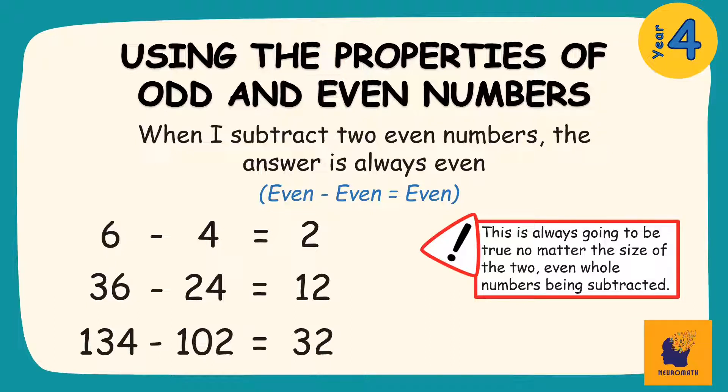So, even if I subtract a 3-digit even whole number from a 5-digit even whole number, my answer will still be an even whole number.